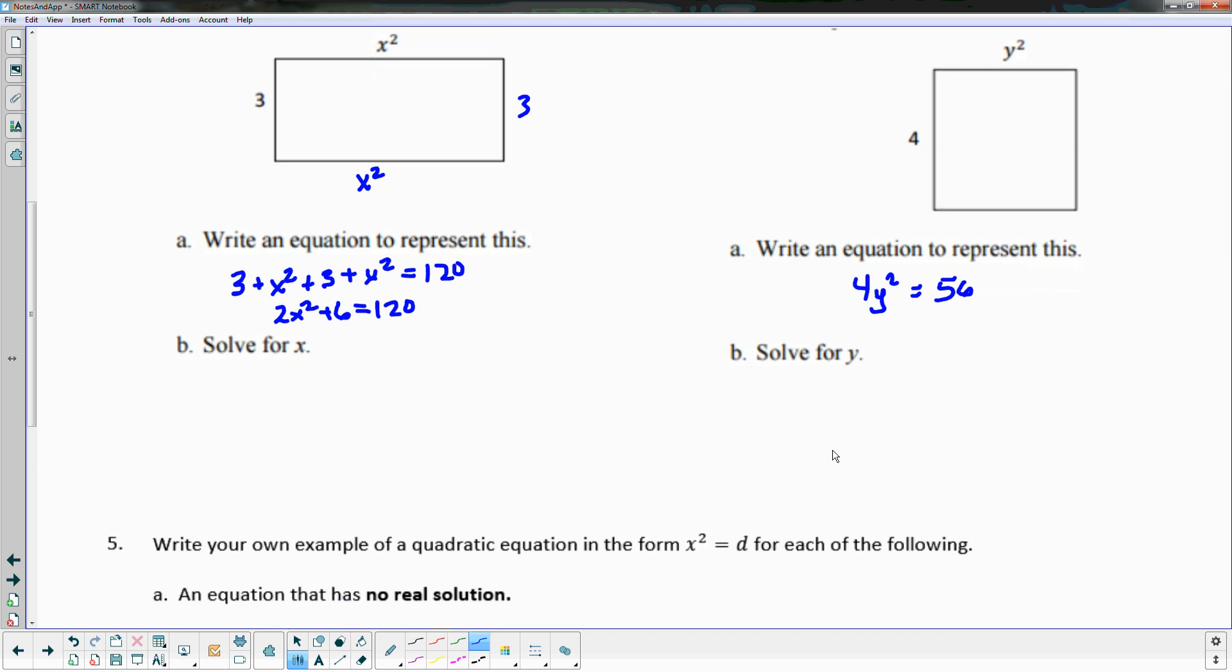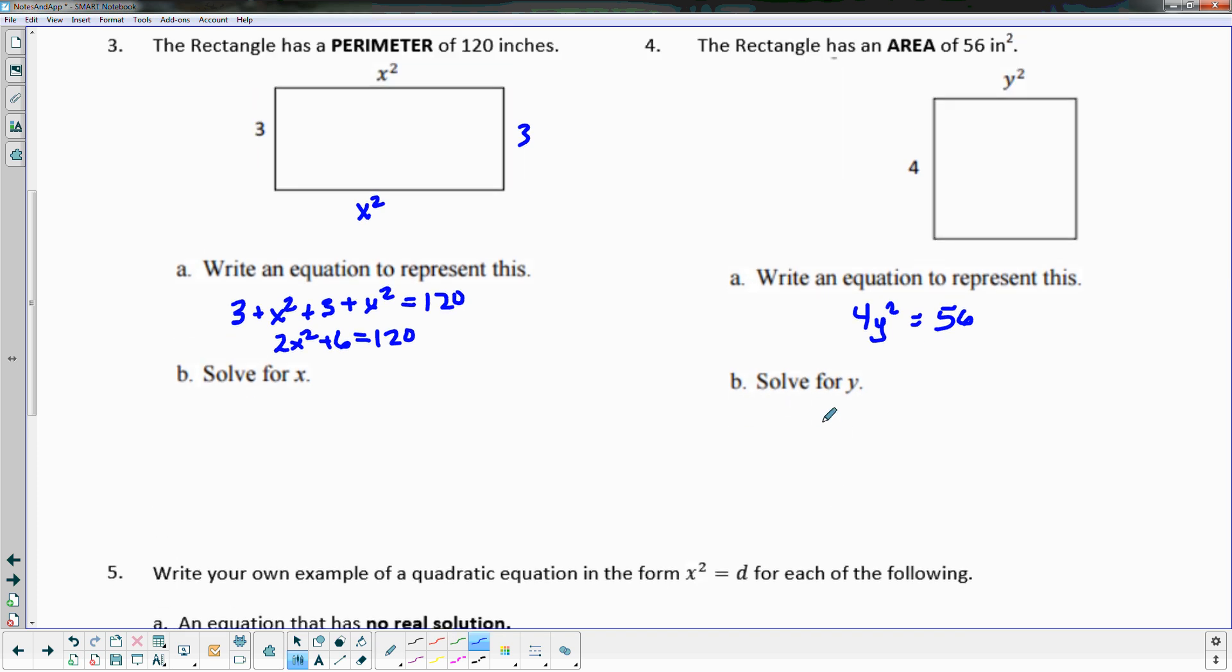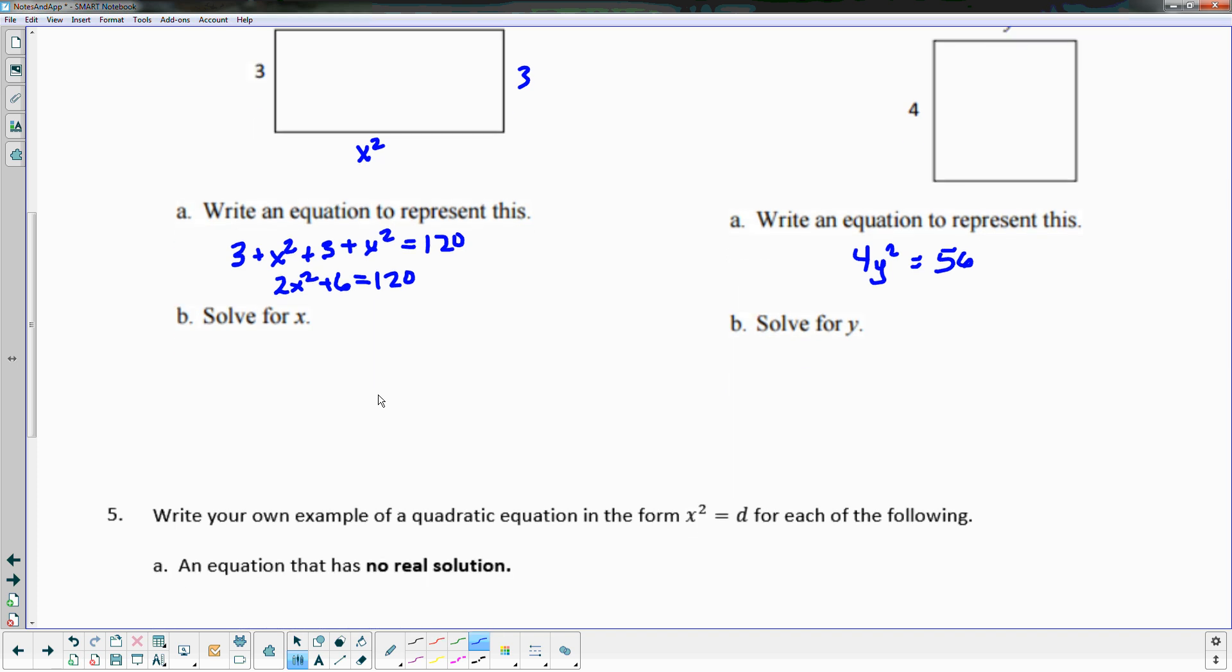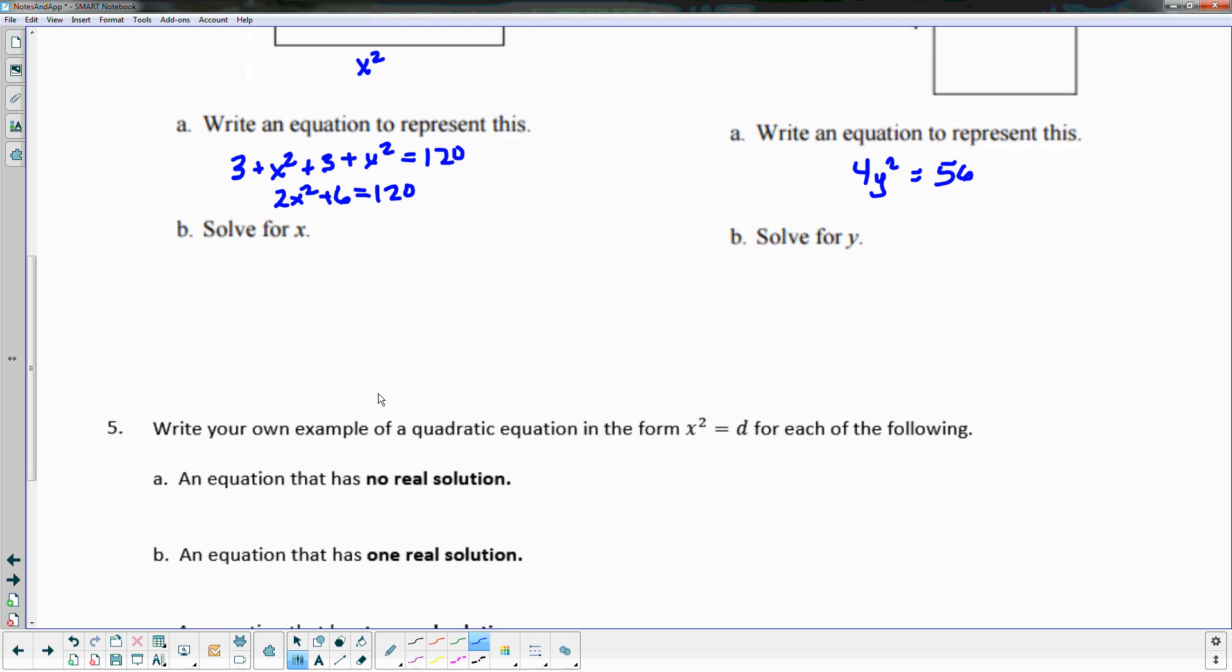And then your job now is to solve that equation and see what you get for y. Totally okay to just have the positive versions instead of the plus or minus here. Technically we don't have negative side lengths on rectangles, so if you still put the plus or minus that's okay, but the positive ones are technically the more correct ones in that case.